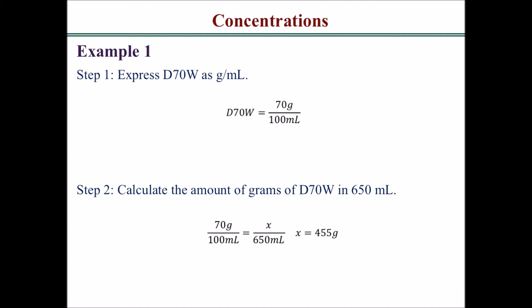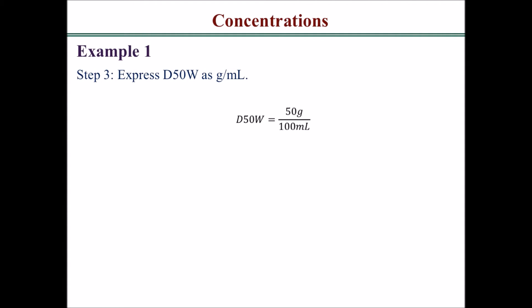You get 455 grams. Then you want to express dextrose 50% as grams per milliliter, that would be 50 grams over 100 milliliters. Then calculate the volume of dextrose 50% needed to contain the mass of the dextrose 70%. We got 455 grams from the previous step over x, and you want to see how many milliliters you need to have a concentration of 50 grams over 100 milliliters, and that would be 910 milliliters.